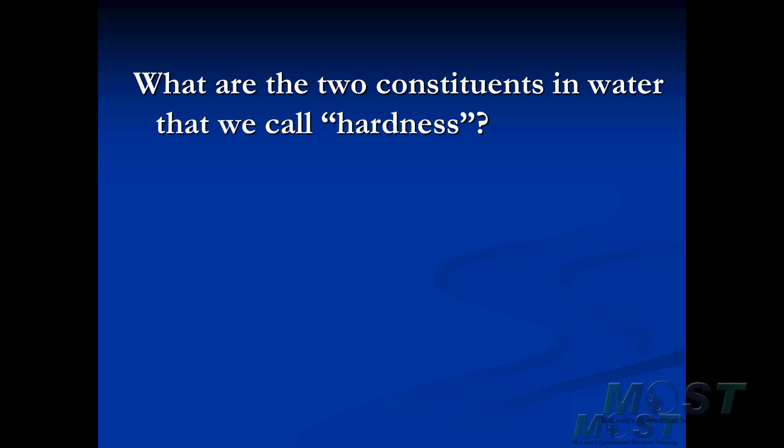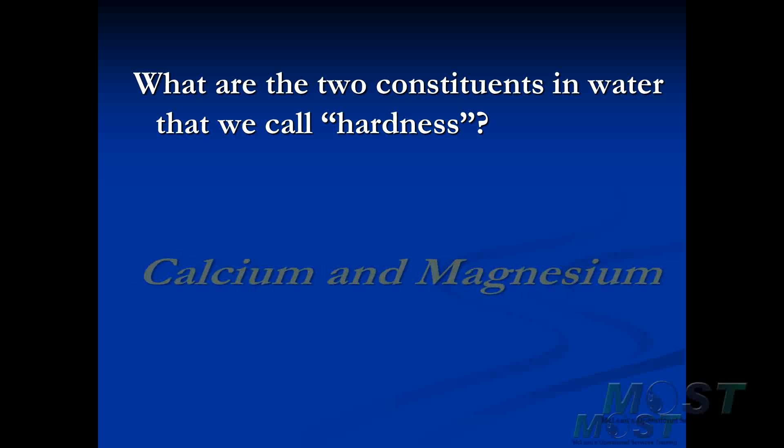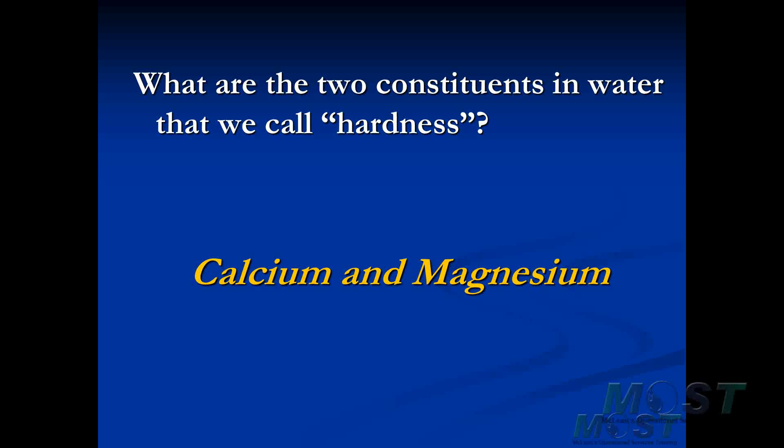What are the two constituents in water that we call hardness? Two metals that we put together constitute hardness: calcium and magnesium. Other metals are involved too, but these are the dominant ones in every water supply. We add calcium and magnesium together to get what we call total hardness.